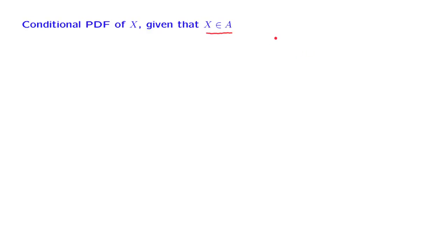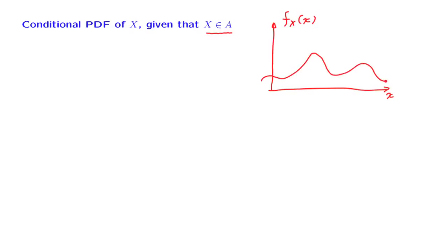Let us start with a random variable X that has a given PDF, as in this diagram, and suppose that A is a subset of the real line — for example, this subset here. What is the form of the conditional PDF?